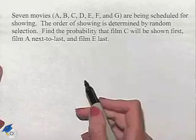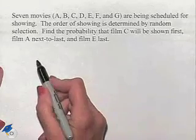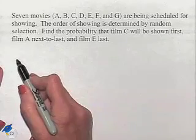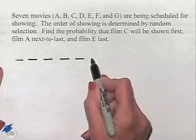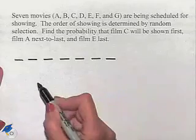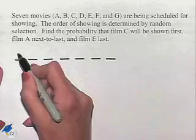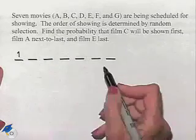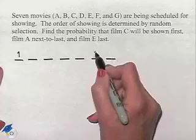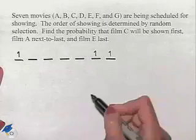Well, we have seven different movies, so we're going to think of this in the following manner. We're going to have one, two, three, four, five, six, seven positions for movies that have to be shown. Now we are told that C has to be shown first, so there's only one choice here. We're told that film A has to be shown next to last, so there's only going to be one choice here. And film E is going to be last, only one choice here.